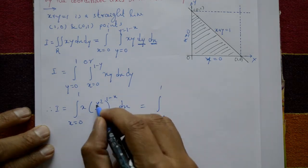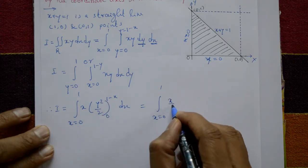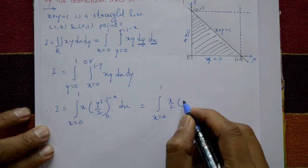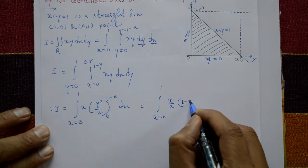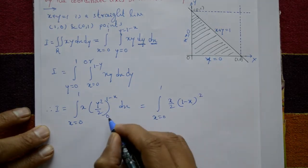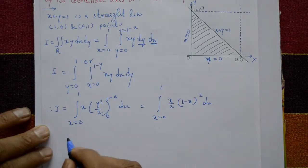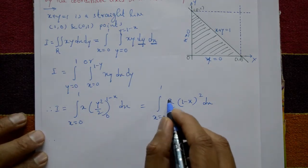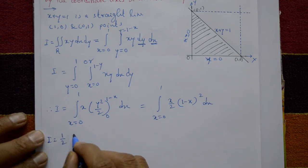Putting in the upper limit y = 1 minus x: y squared becomes (1 minus x) squared. Putting the lower limit y = 0 gives 0. So I equals 1/2 times the integral from x = 0 to 1 of x times (1 minus x) squared dx.